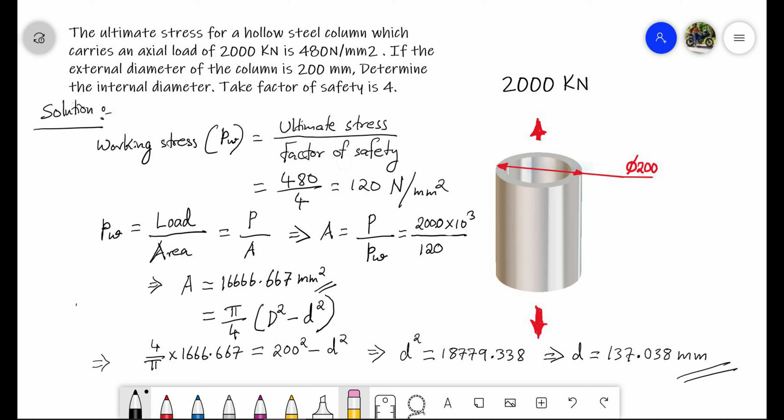Here units are very important — substitute force in Newton and area in mm squared. Strain, or rate of change of deformation, can be found using change in length by original length, or stress by Young's modulus. Since Young's modulus is given and stress is already calculated, we can directly find strain. Strain has no unit. Elongation is strain times length, giving the value in mm or meters.